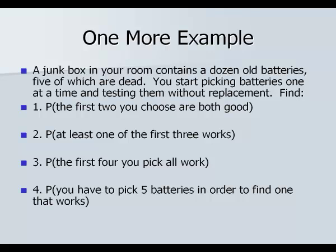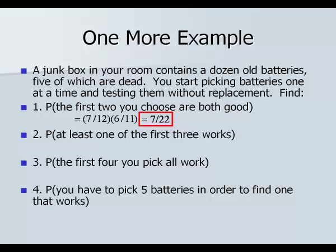Here's another example. We have a box containing a dozen old batteries: five are dead, seven are good. We pick batteries one at a time without replacing them. First, find the probability that the first two chosen are both good. The first one has a 7 out of 12 chance of being good, and the second has a 6 out of 11 chance. Seven-twelfths times 6 out of 11 gives 7 out of 22.